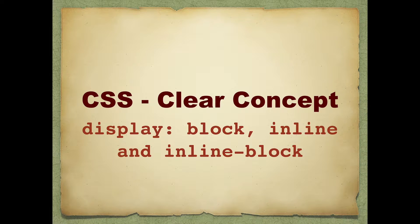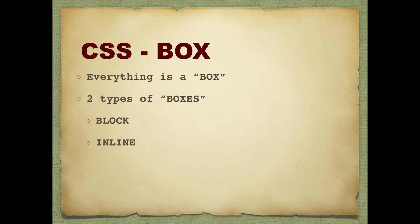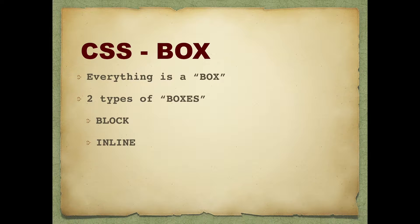They are the building blocks of our HTML page. In CSS, everything is a box. There are two types of boxes: block and inline. Block boxes are the ones that occupy the entire space, whereas inline are the ones that occupy only the needed space. That's the main difference between them.